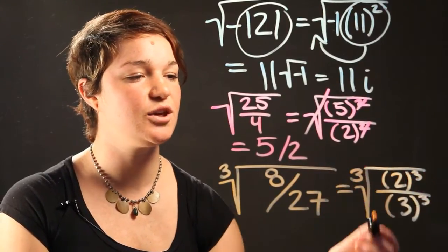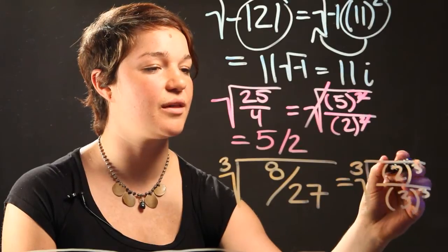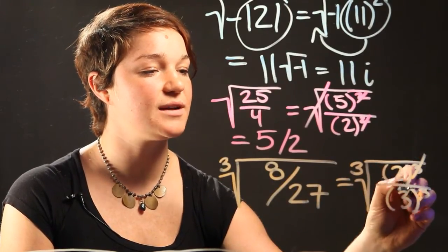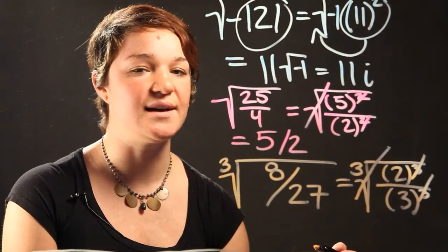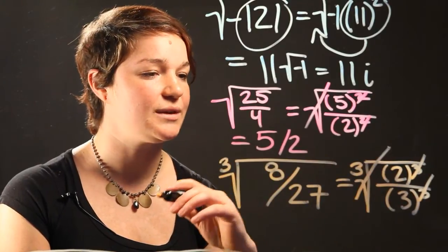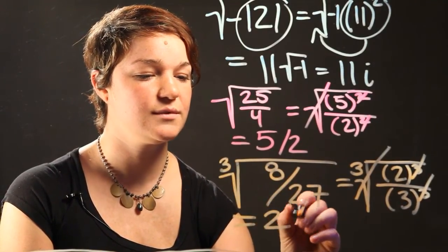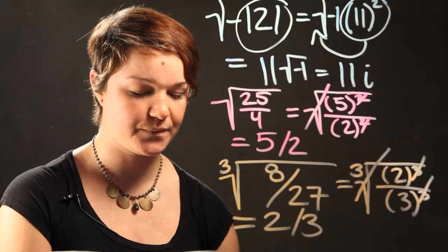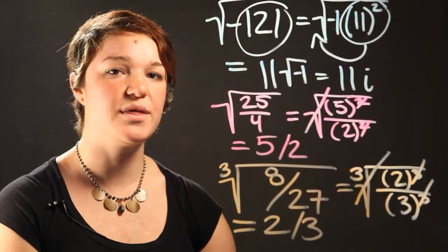That's why we converted these numbers to numbers to the third power. When we're taking the cubic root, we're converting the numbers to have the third power, so we can cross out the powers as well as the cubic root. What we're left with is 2 divided by 3.